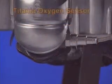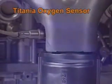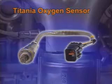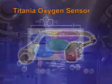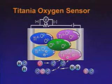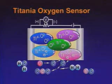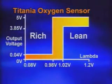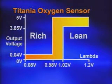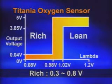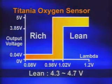The titania oxygen sensor, unlike the zirconia sensor, requires a voltage supply as it does not generate its own voltage. It operates by changing resistance depending on the air-fuel mixture. The ECM supplies 5 volts and measures the voltage drop. The output voltage range is 0.5 to 4.5 volts — 0.5 volts indicates a rich mixture and 4.5 volts indicates a lean mixture.